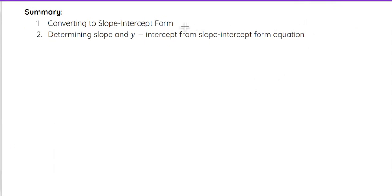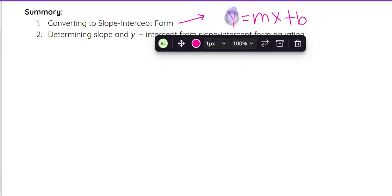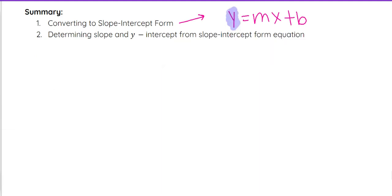So we talked about converting into slope-intercept form — remember, that's y equals mx plus b, where y has to be by itself. Our slope is our m, and our y-intercept is our b. We look for the number multiplied by x for slope, and the constant is our y-intercept.